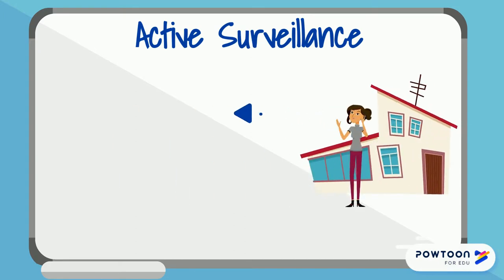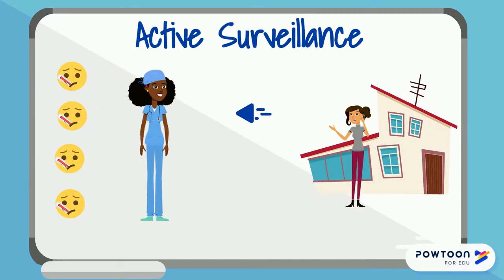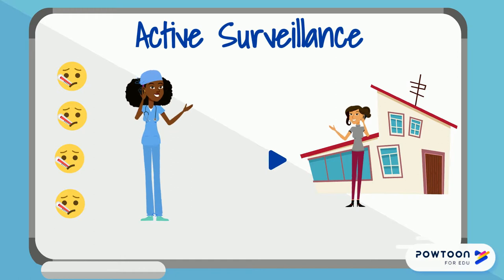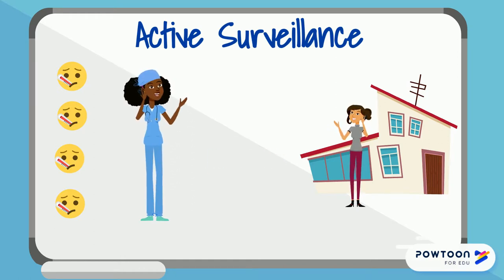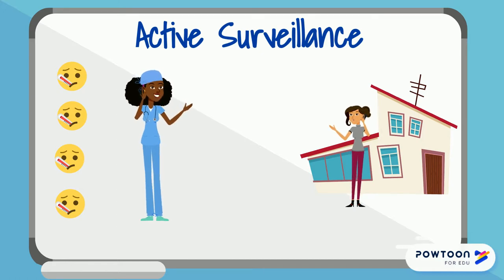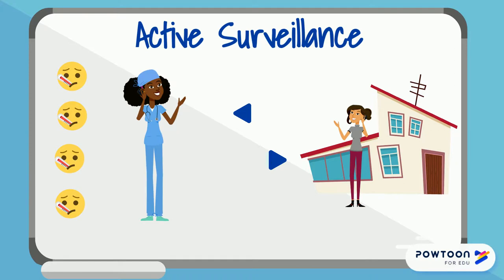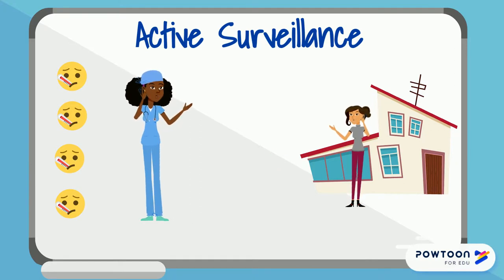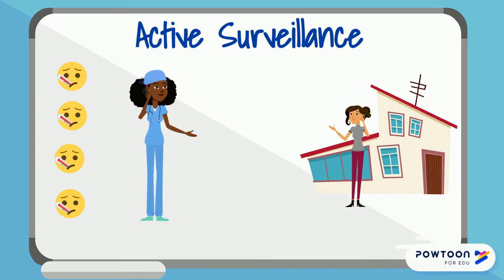Active surveillance is initiated by the public health community. It is used when information is needed faster than passive surveillance can produce, or when additional information not often collected by passive surveillance is needed. Active surveillance is critical for rare events. It requires additional resources and might only be useful for a short period of time. An example would be a local health department calling local emergency departments every hour for any cases with symptoms associated with chemical exposure.